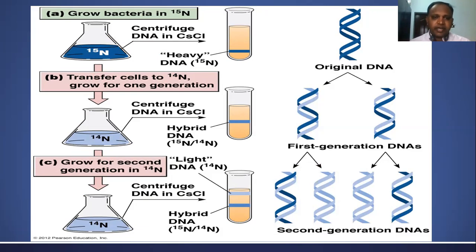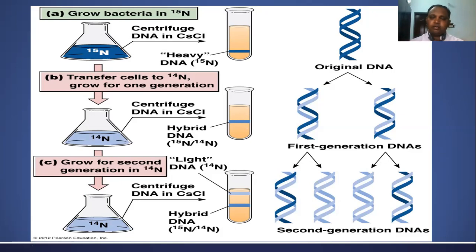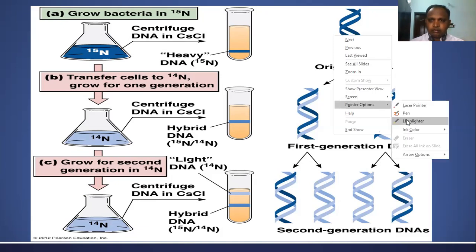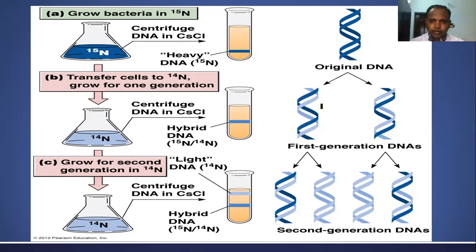Then the cells were transferred to N14 media and allowed to complete generation 1. After 20 minutes, DNA was extracted and they got only one band in the middle — not at the bottom. Again, the cells were allowed to complete a second generation in N14. From there they isolated DNA and got two bands. In the N15 DNA, both strands were labeled with N15. When transferred to N14, one strand remains N15 and the other gets N14, forming hybrid DNA. After the second generation in N14, they got two bands: two hybrid and two lightweight DNA molecules, which is experimental proof that DNA replication is semi-conservative.